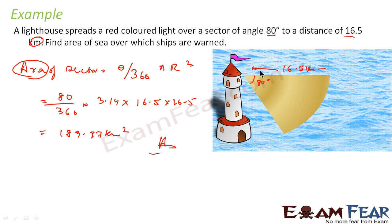So this is the lighthouse — it throws light over a sector. The maximum distance covered is 16.5 km and the angle is 80 degrees. Once you understand it forms a sector, the question is very simple.